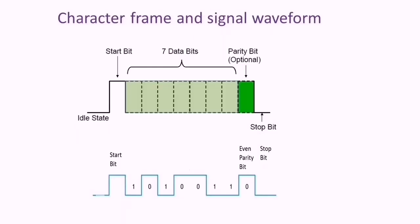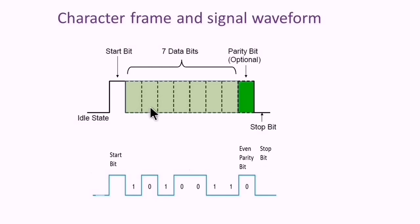It is good to understand how serial information normally flows. Taking an example of one-character transmission: first, the baud rate needs to be set the same at the sender and receiver so the bits can be sampled correctly. In serial communication, one bit at a time is sent.